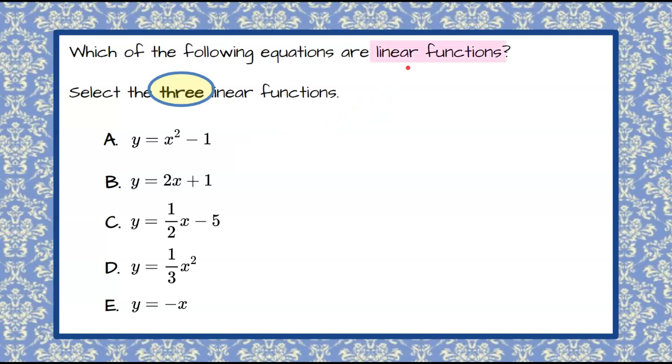When we're talking about linear functions, we're going to look for ones that are written in the form y equals mx plus b, which is slope intercept form. M represents the slope and b represents the y-intercept.